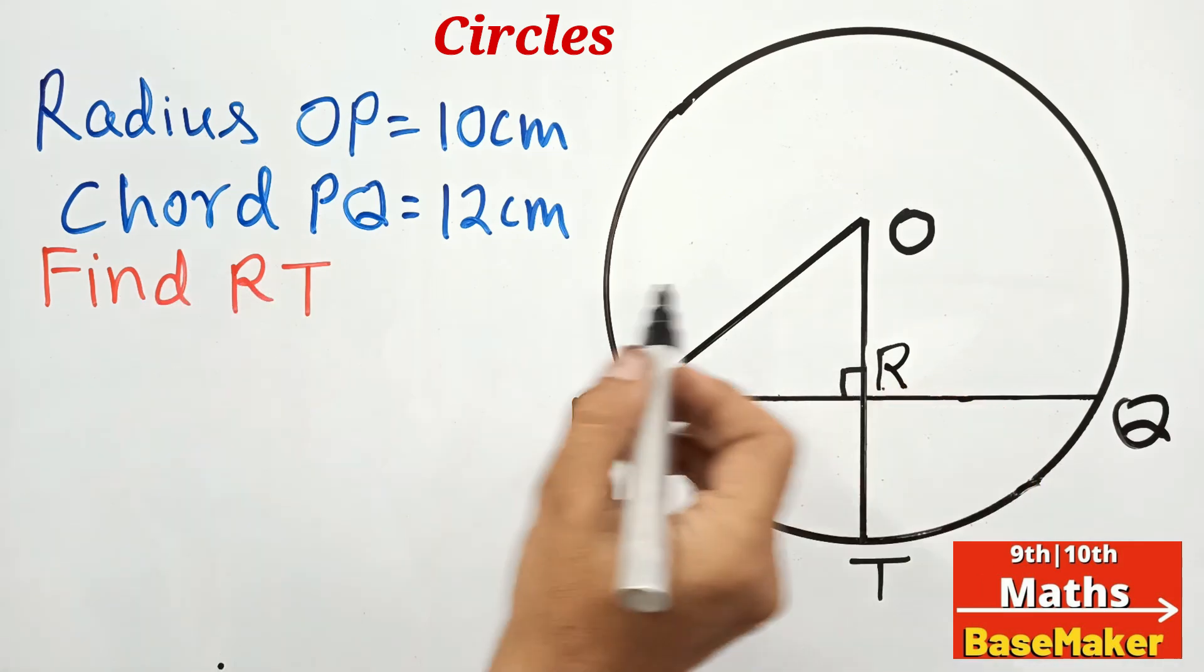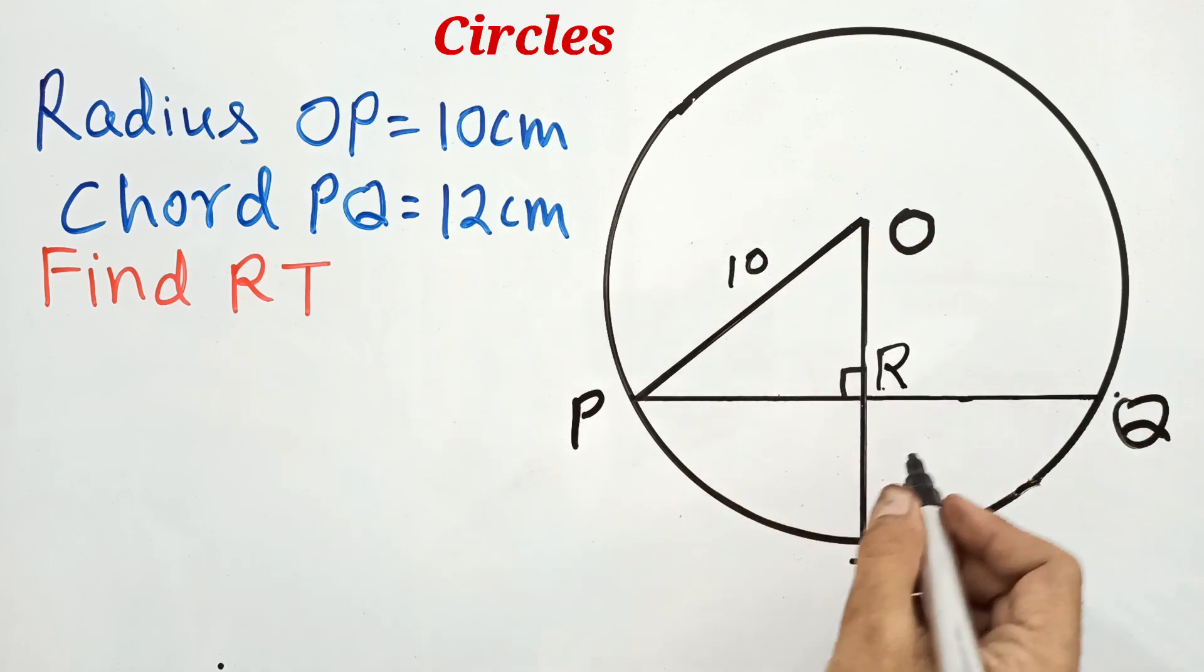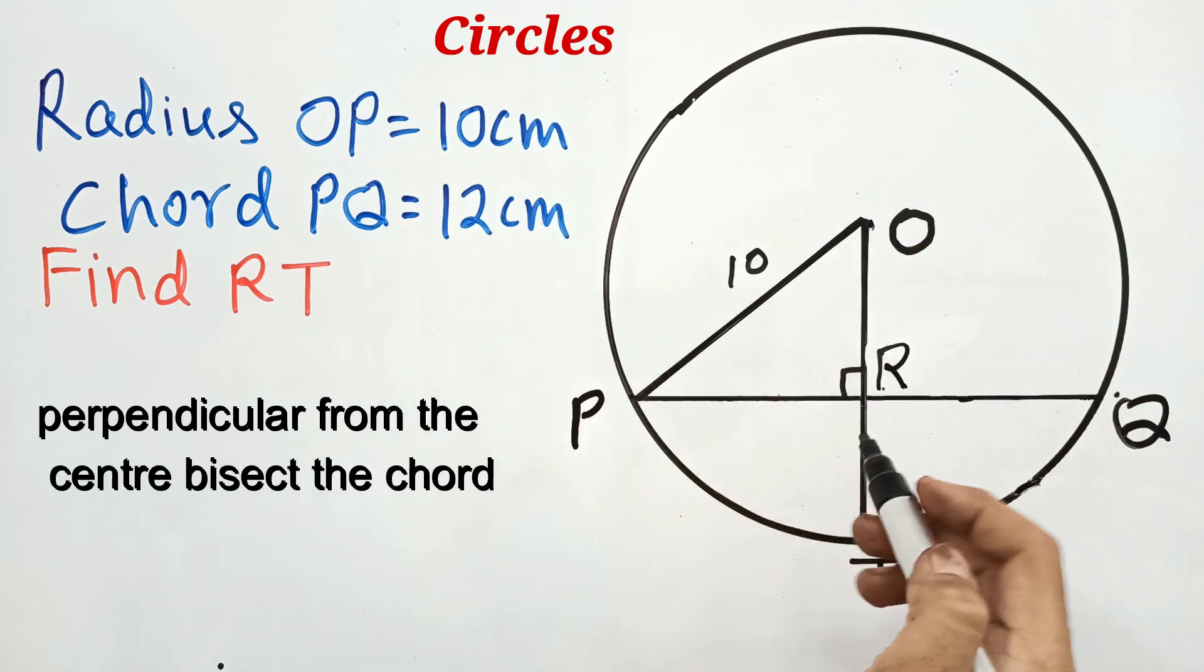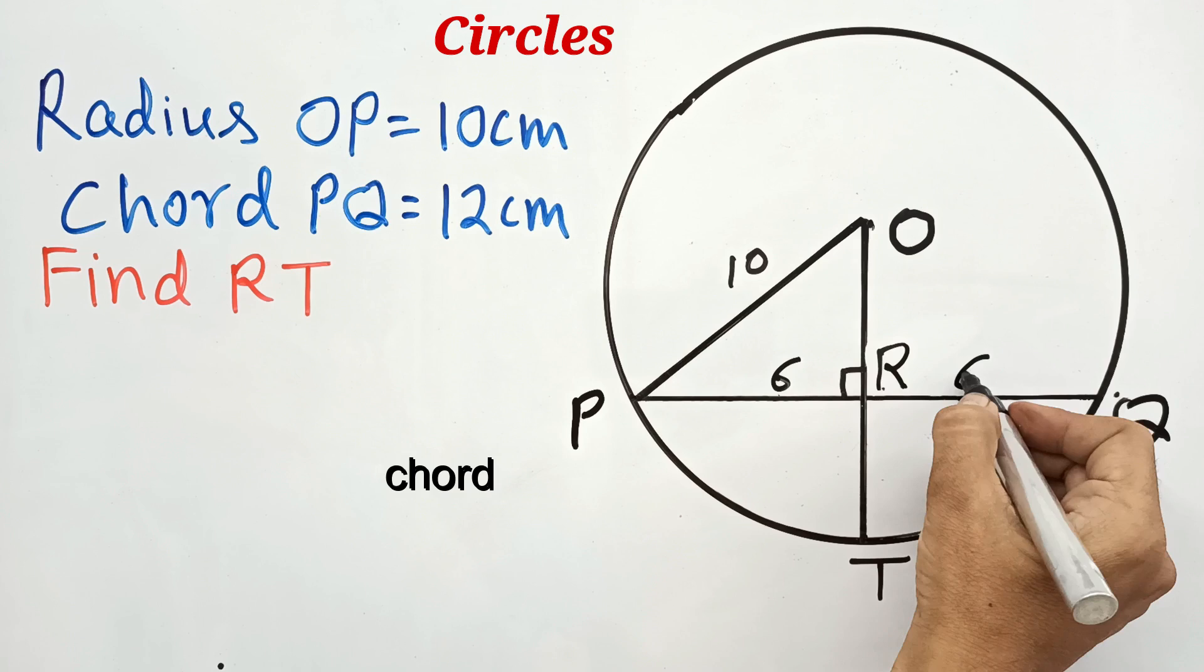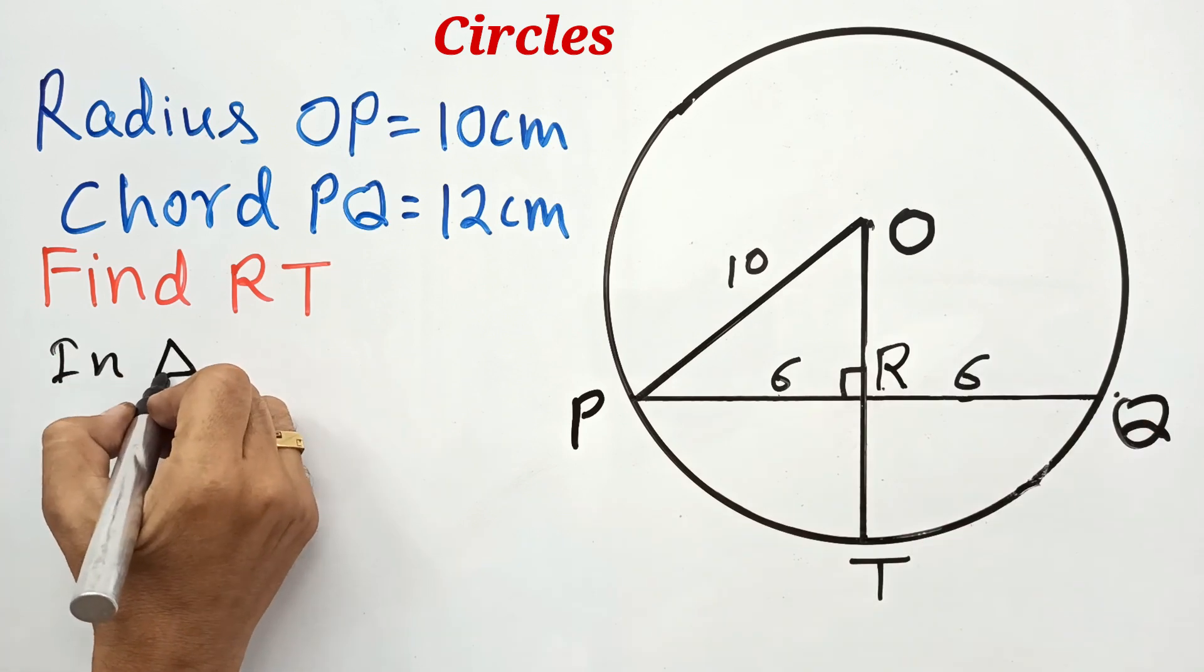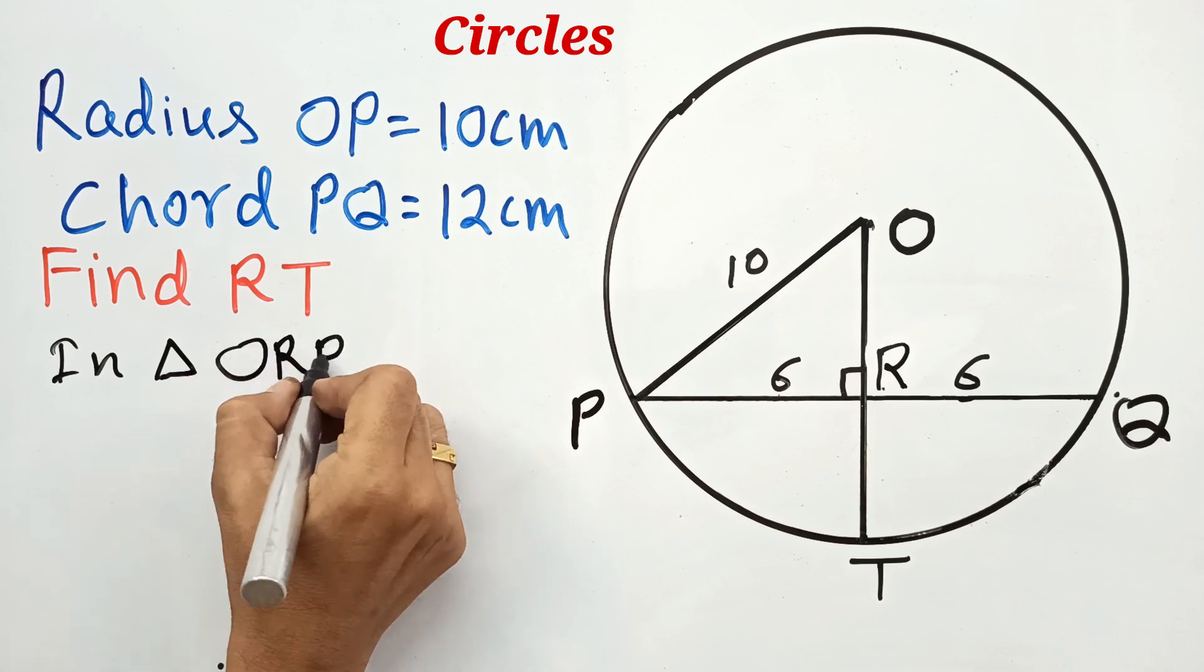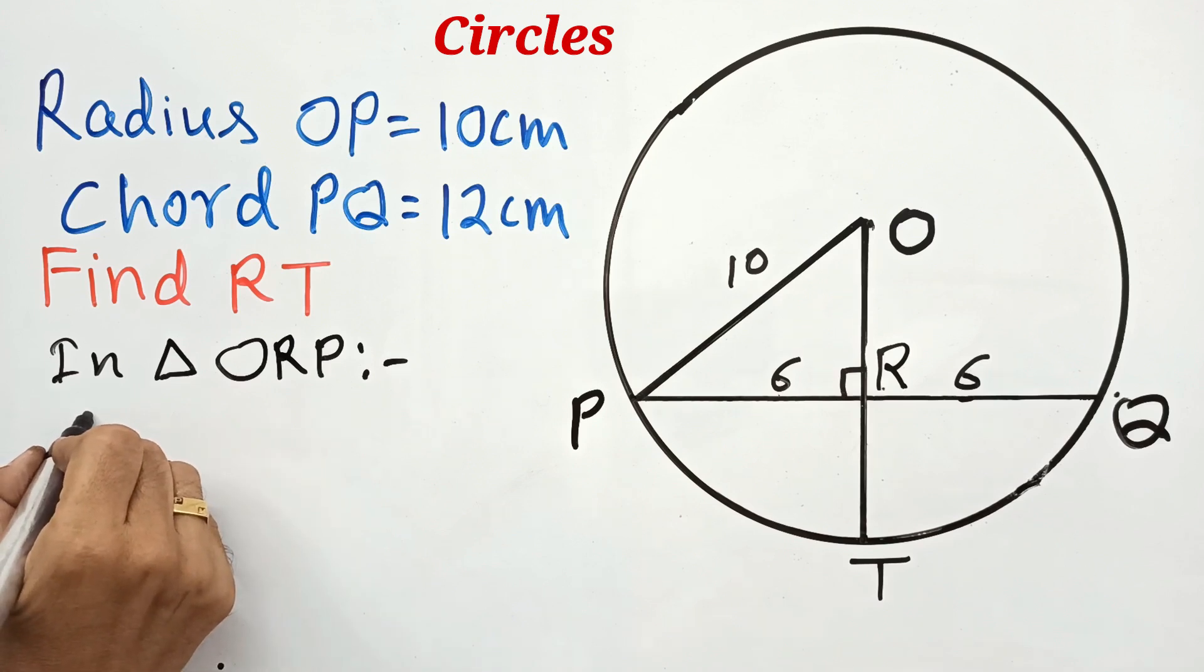Focus on the calculations. This is 12 centimeters and we know the rule: perpendicular from the center bisects the chord, so each part will be 6 centimeters. In triangle ORP, using Pythagoras theorem...